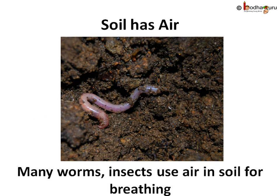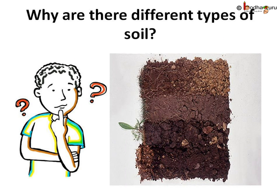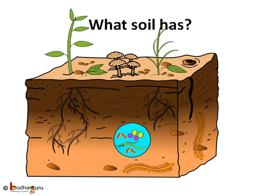Many animals which live in soil, like earthworms, use the air trapped in soil for breathing. The ability of holding water and air is not the same in different soils. If we just look around, we can tell there are different kinds of soil. But why are they different? We need to know what soil consists of in order to understand the difference between various soils.